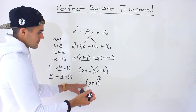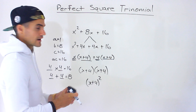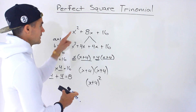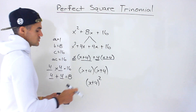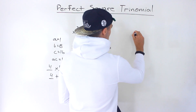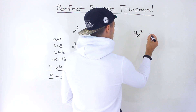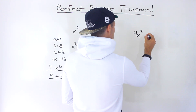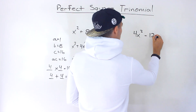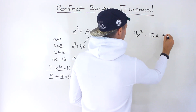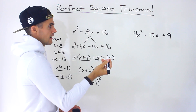Notice two identical factors — since they're the same, x plus 4 times x plus 4 is written as x plus 4 squared. If you get something in this format that factors into that format, it was a perfect square trinomial. Let's do another example: 4x squared minus 12x plus 9.